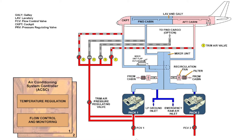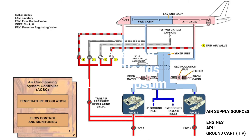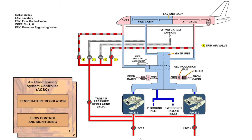Now we'll go through the components and discuss their functions. This is the basic diagram. You have flow control valve one here and flow control valve two here. For pack one you use flow control valve one, and for pack two you use flow control valve two. Air flow comes from one of the sources — engine, APU, HP ground cart.